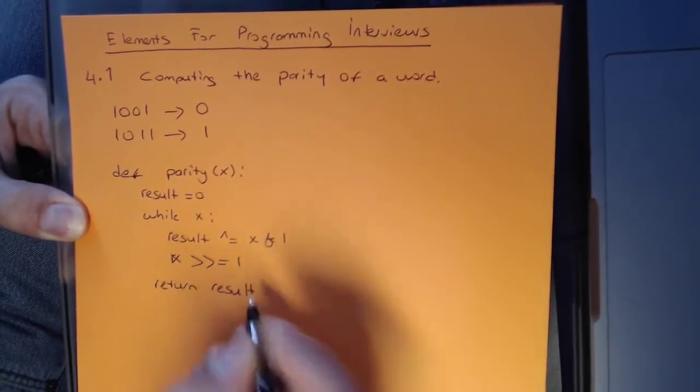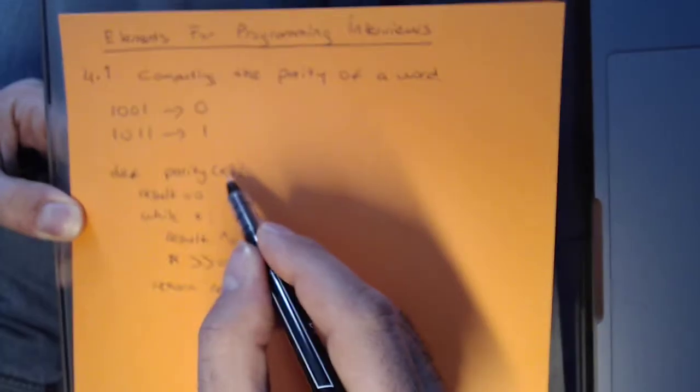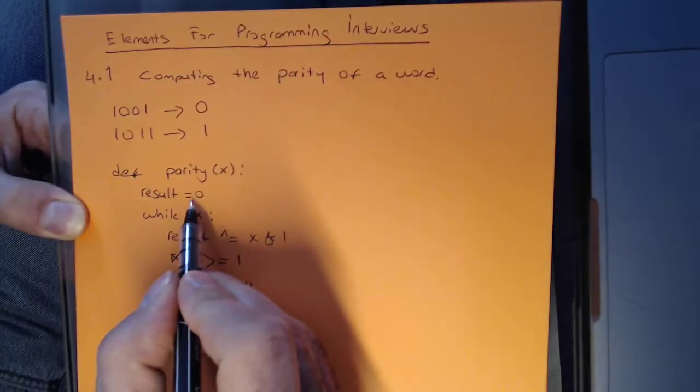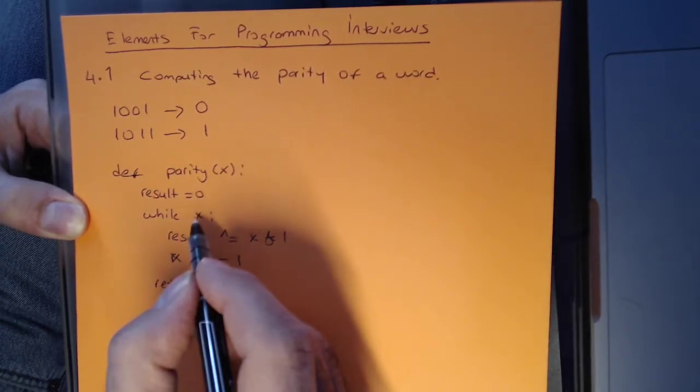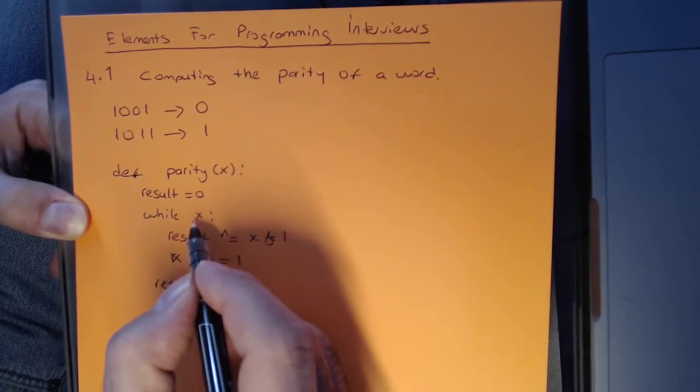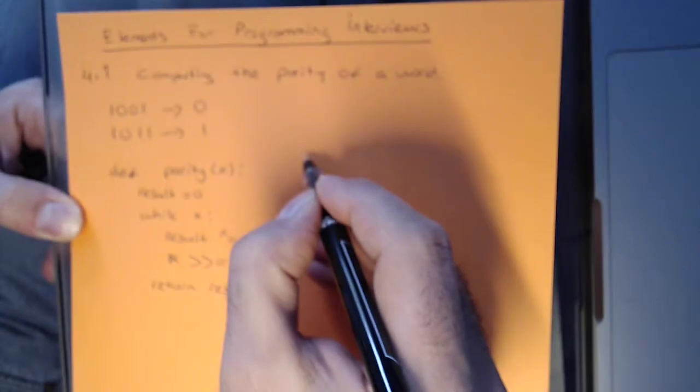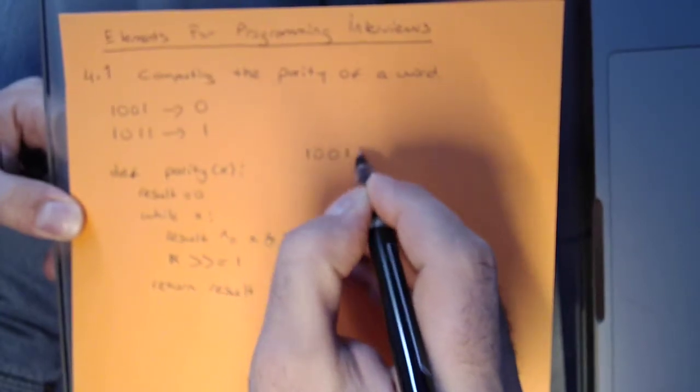So what's happening here? We are taking a binary word, and we're going to store the result, and we're going to be iterating through every bit of X. So given, let's say, we take X as 10011...